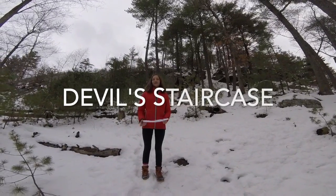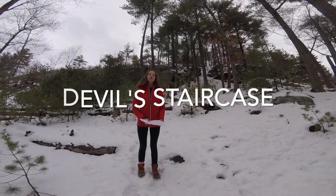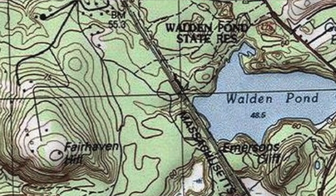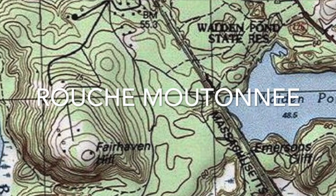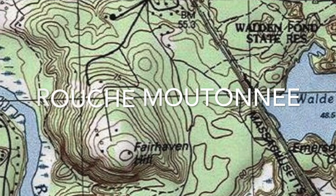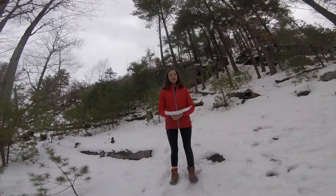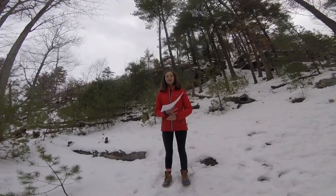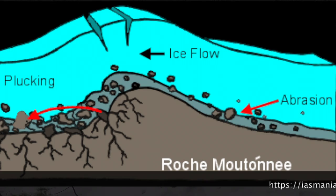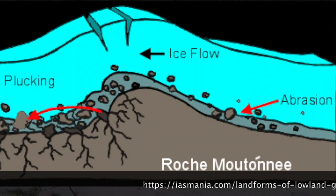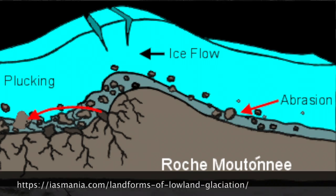We're here at Double Staircase. We chose this because it's a known Roche-Moutonnée in Concord. Roche-Moutonnées are formed through the advance of glaciers and erosion.